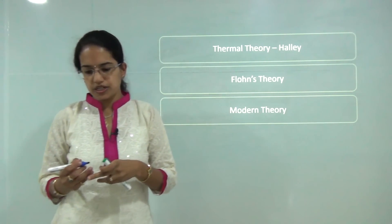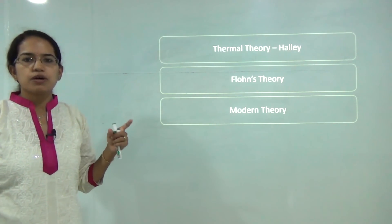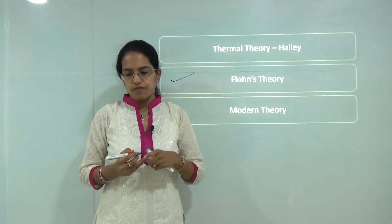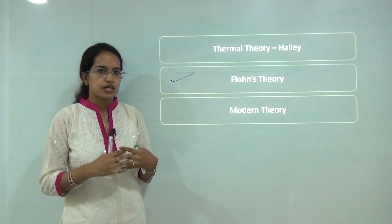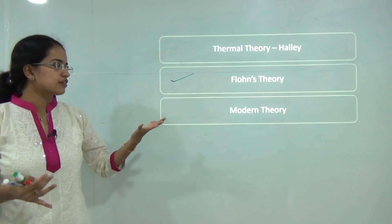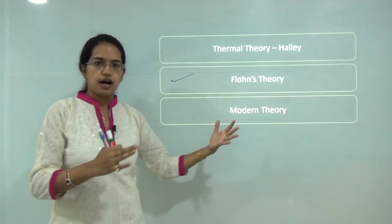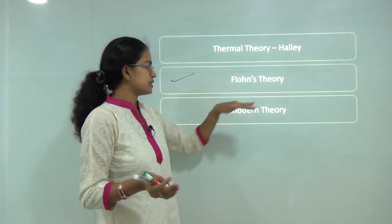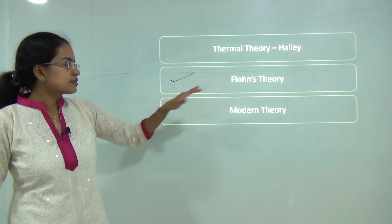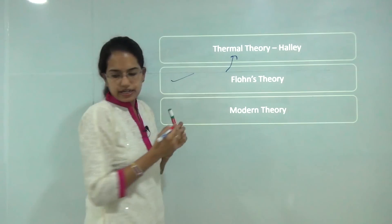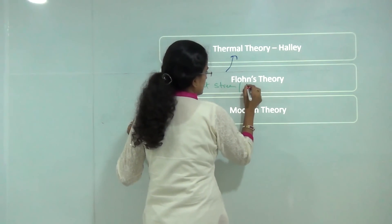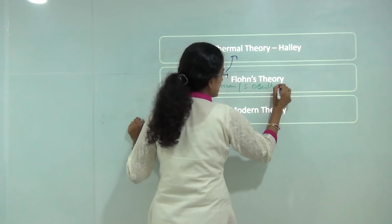The next theory is Flohn's theory, which tried to explain the migration of thermally produced zones of planetary winds and pressure belts. However, Flohn's theory faced major criticisms: it could not explain the early arrival of monsoon, it was unable to explain the dynamic nature of monsoon — why there is abundant monsoon at certain periods and dry spells at others — and it completely ignored the concepts of jet streams and southern oscillations.